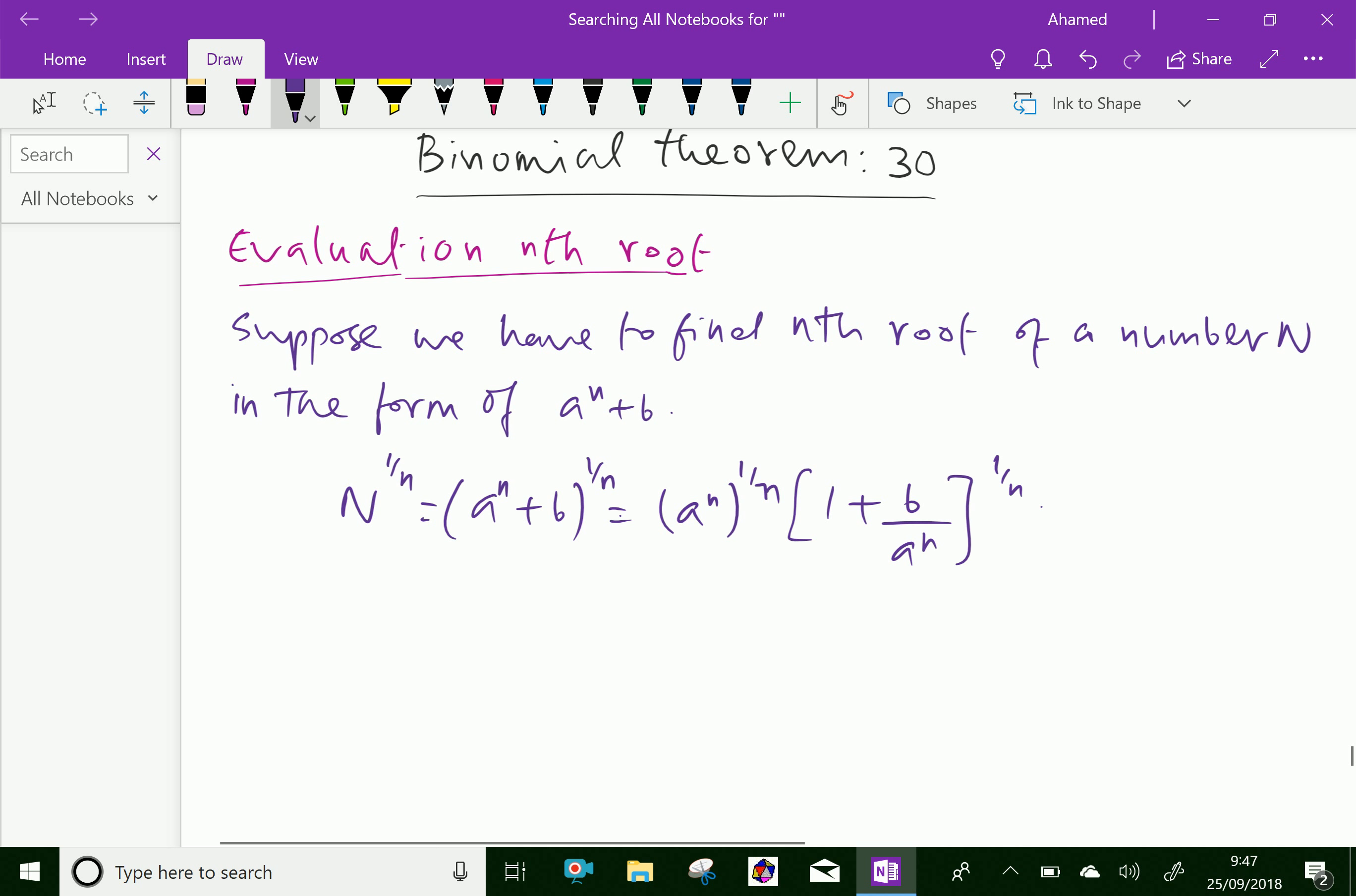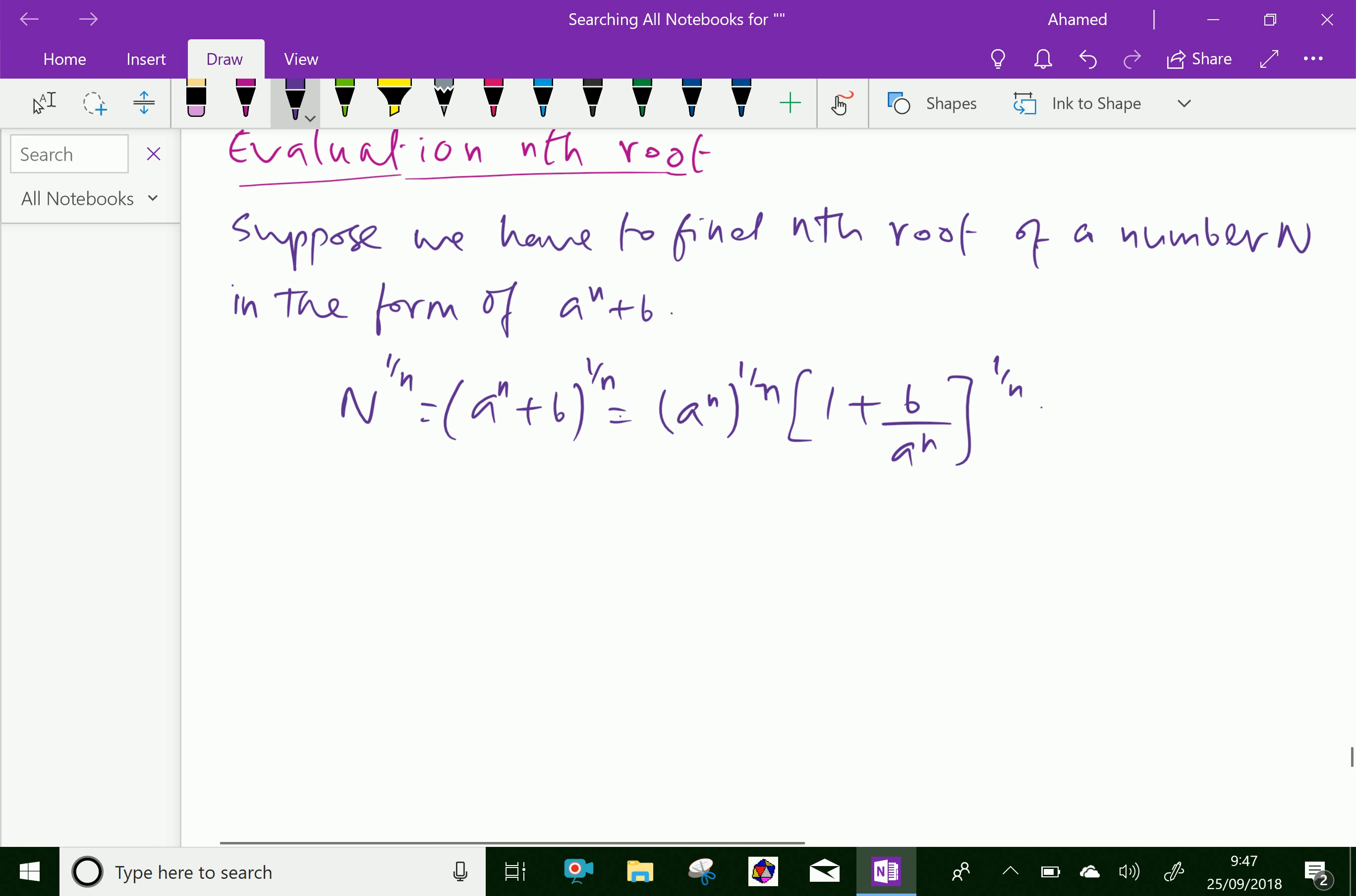Now, by expanding this by using binomial expansion, we can find the approximate value of the root by expanding (1 + b/a^n)^(1/n), then approximate value of the root of the number we can get it.